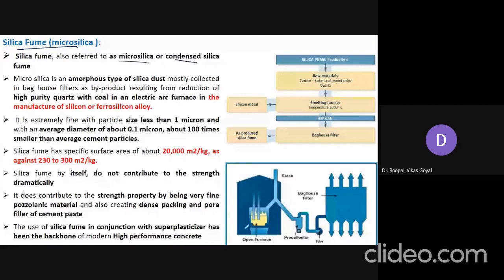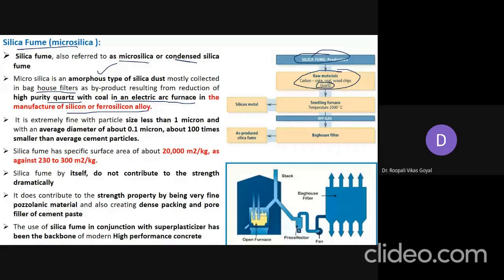Silica fume, also called micro silica or condensed silica fume, is a byproduct of the manufacturing of silicon or ferro-silicon. It is an amorphous type of silica dust collected in a baghouse filter, which is an air pollution control device. It results from the reduction of high-purity quartz with coal in an electric arc furnace. The raw materials are carbon, coke, coal, wood chips, and quartz. At a smelting temperature of around 2000°C, silicon metal is the primary product, and silica fume is the byproduct collected in the baghouse filter.